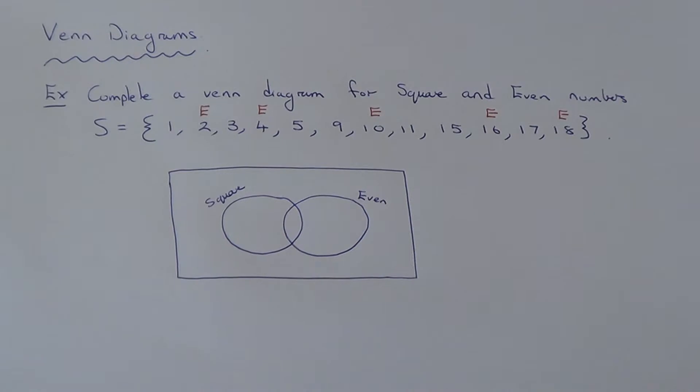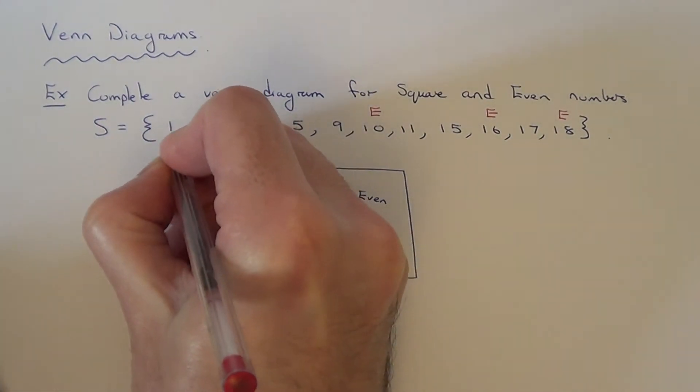The square numbers are a little bit trickier to do. So the square numbers are the numbers which you get when you times a number by itself. So if we start off with 1 times 1, that is 1. So 1 is a square number.